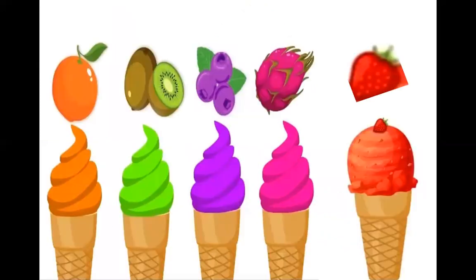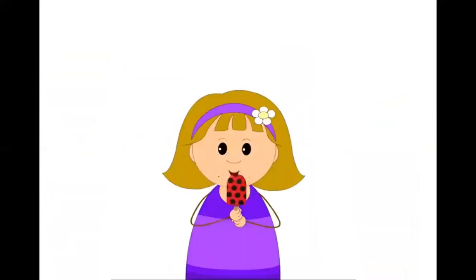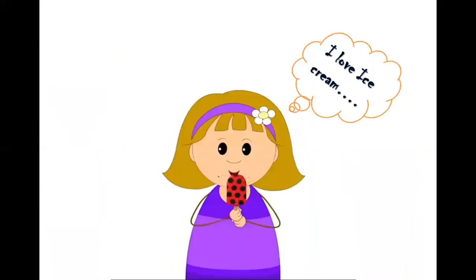Now we have learned about orange, green, purple, pink, and red. Can you see the fruits and colors? Very good! Now the girl is eating an ice cream and she's saying 'I love ice cream' — we all love ice cream!